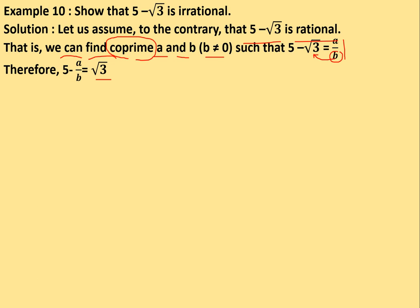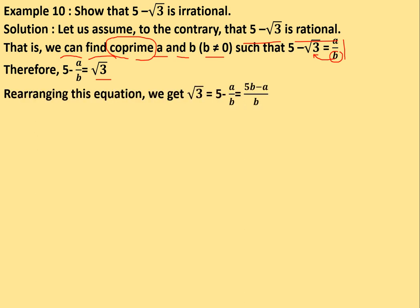So we rearrange: root 3 = 5 − a/b = (5b − a)/b. Now, since a, b, and 5 are all integers, the expression (5b − a)/b is a rational number. Any fraction formed entirely from integers will always be rational.